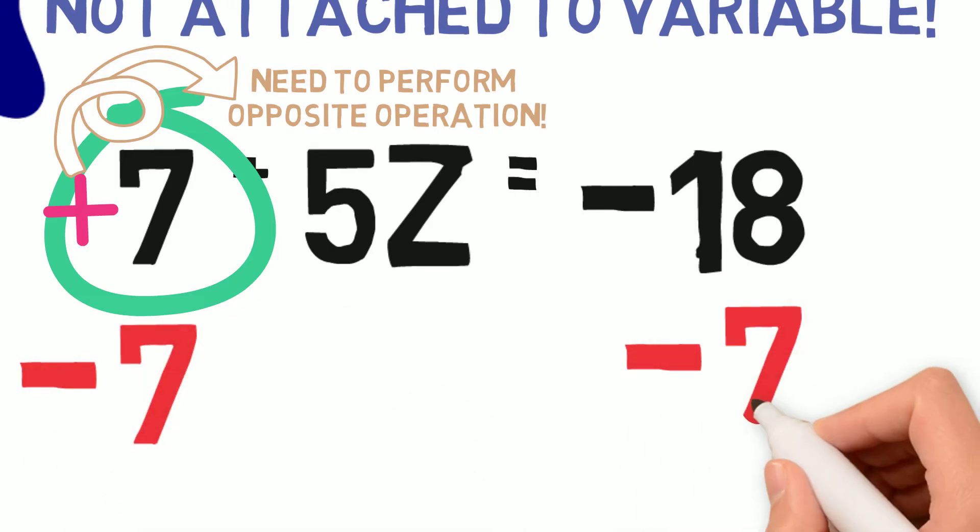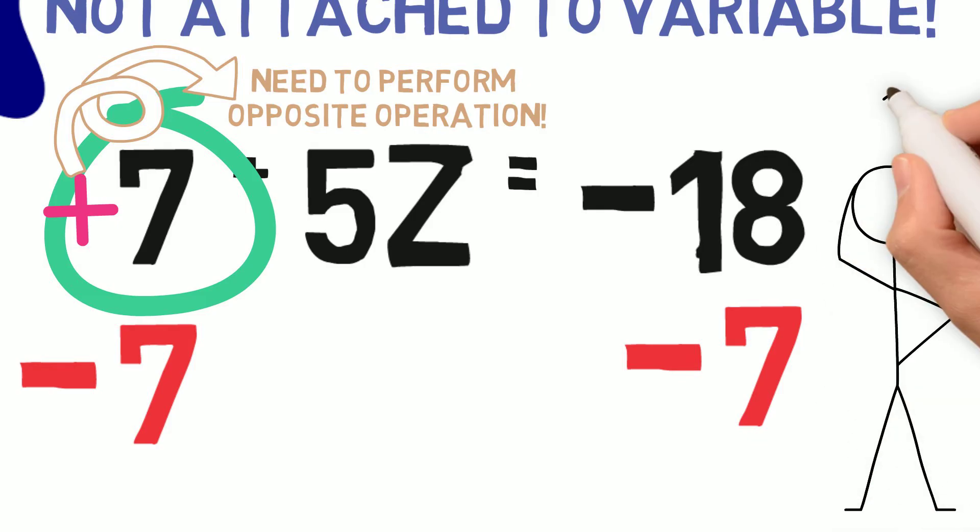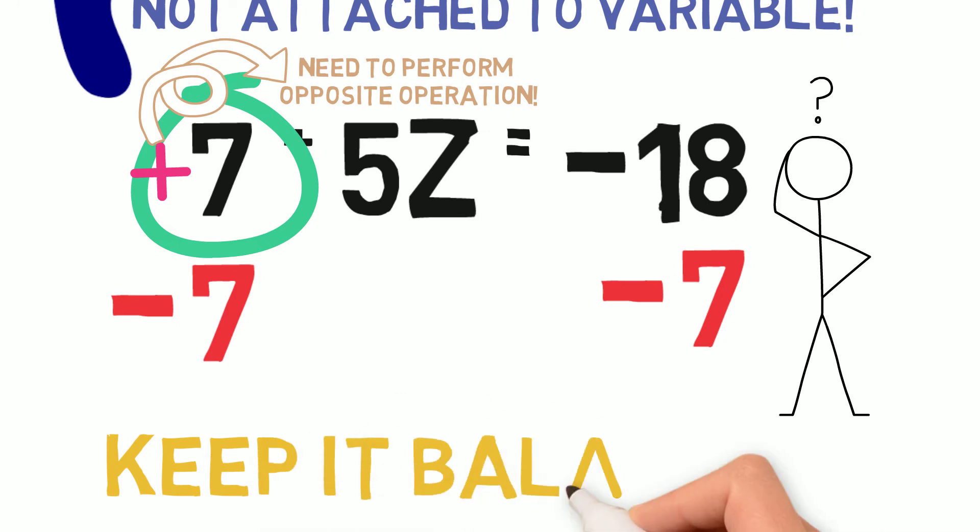After we subtract 7, we have to make sure we subtract 7 from the opposite side. Some of you might be thinking, why? Because we have to keep the equation balanced.